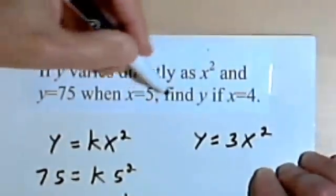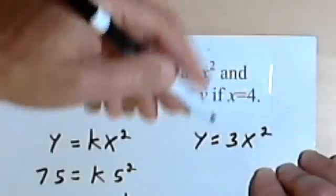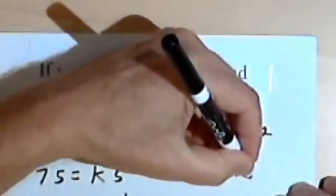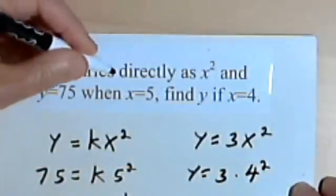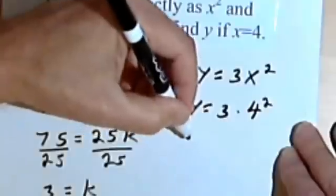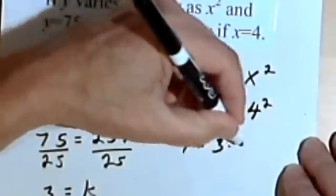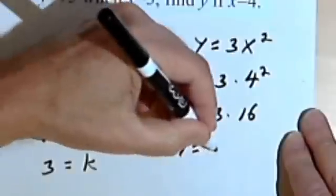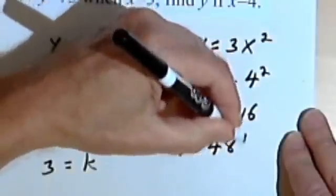And we want to know what y is when x is 4. So y equals 3 times 4 squared. And 4 squared is 16, so it's 3 times 16. And 3 times 16 is 48.